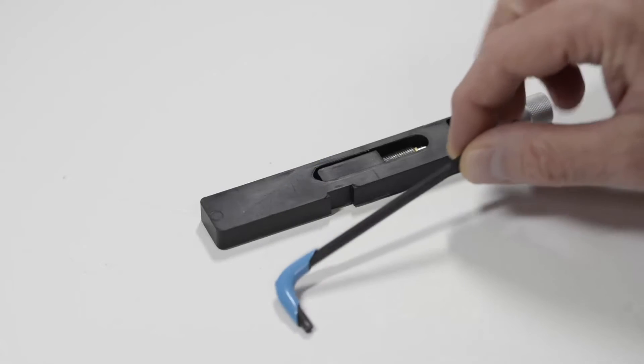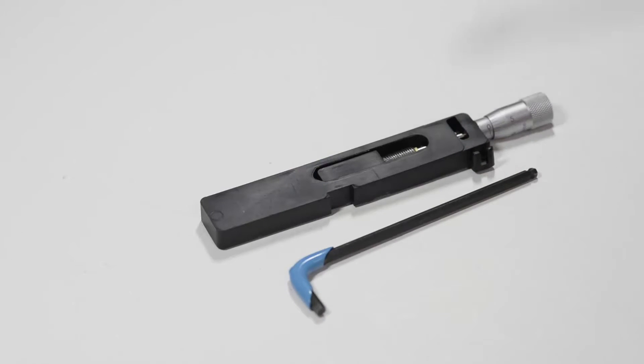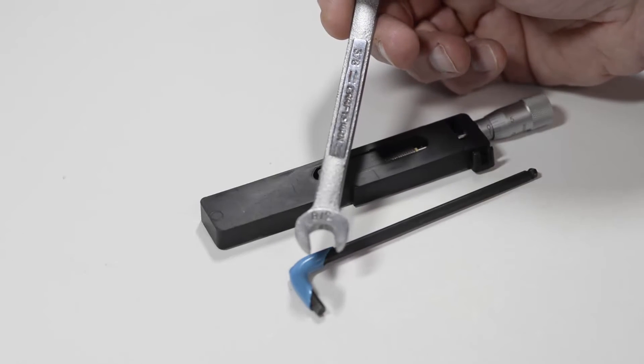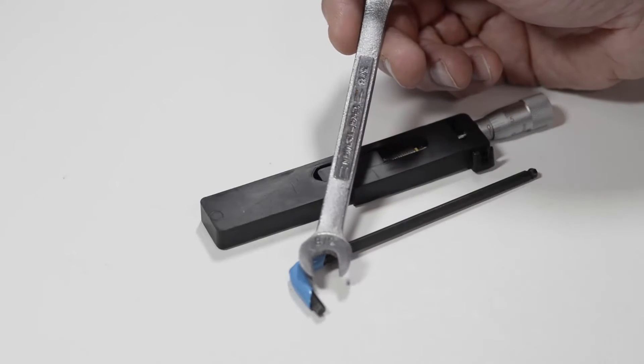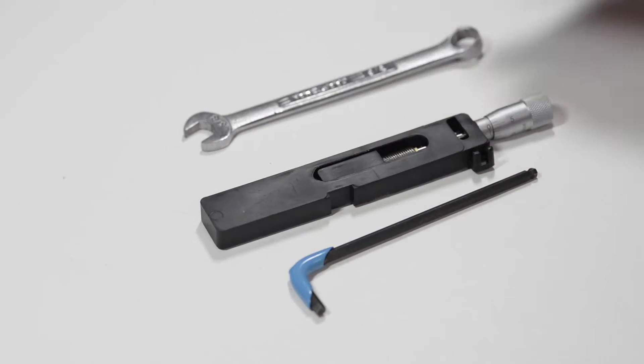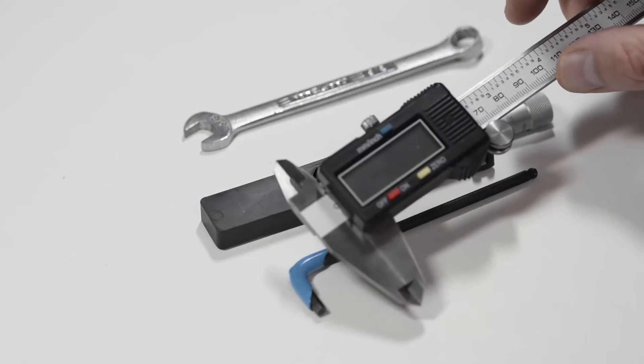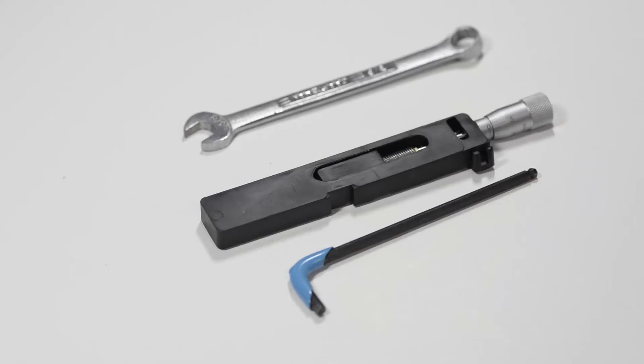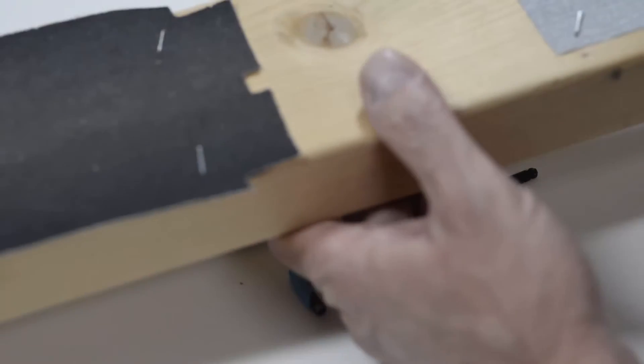You'll also need a 5/32nd Allen wrench, a 3/8th wrench either open or closed end, caliper to measure the thickness of the powder bars, pencil and paper to record measurements, and a sanding block and a C-clamp to hold it.